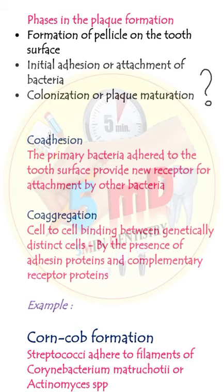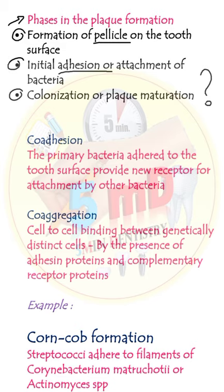What is corn-cob formation? In the process of plaque formation, there are three main phases: the formation of pellicle on the tooth surface, initial adhesion or attachment of the bacteria, and colonization or plaque maturation.